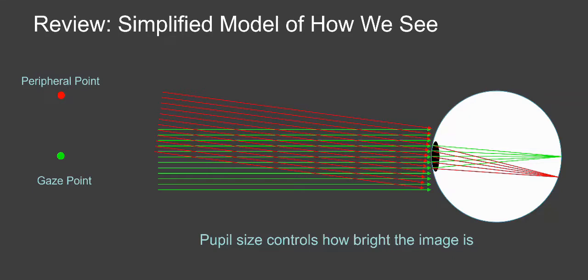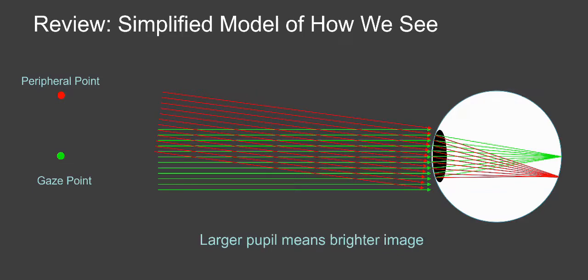The size of your pupil controls how bright the image is. So if your pupil is small, you see the two points, but they may be a little dimmer. If your pupil gets bigger, it lets in more light rays and it gets brighter.